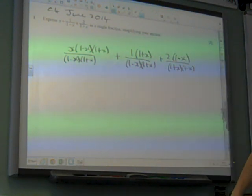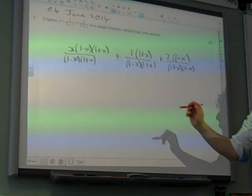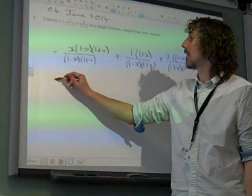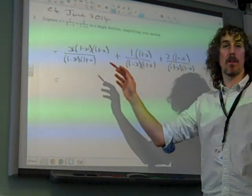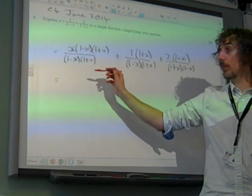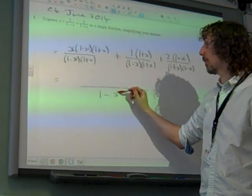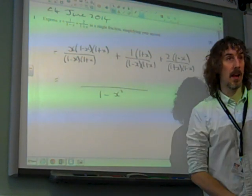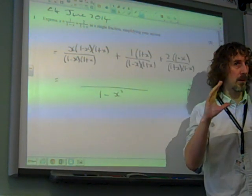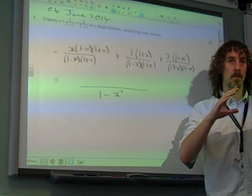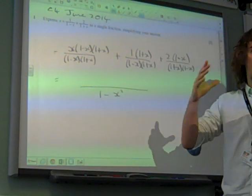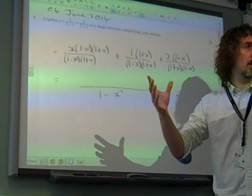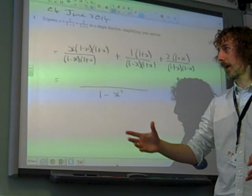So there we have it looking like that. We now need to simplify it. It does say simplifying your answer. So that bottom line, which is currently factorised, we are going to write as being 1 minus x squared, because that's it fully simplified. Factorising doesn't mean simplifying, so it's kind of the opposite of simplifying, factorising. To simplify something you've got to multiply out all the brackets.